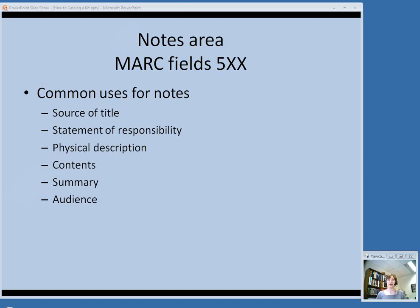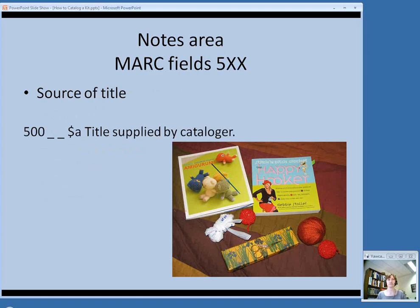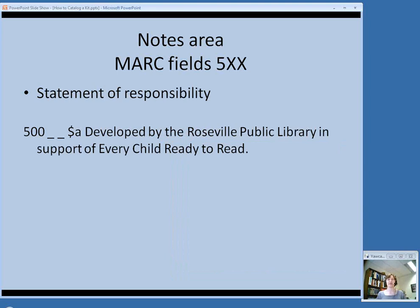The next area is the notes, all going in the 5XX fields. Common notes for kits include source of title, statement of responsibility notes, physical description notes, contents notes, summary notes, and audience notes. For example, if you supplied a title you should add a note saying 'Title supplied by cataloguer.' You can also include notes about other sources of the title in a general 500 note. Here's a statement of responsibility note from a locally produced kit at Roseville Public Library indicating they developed the kit as part of a program called Every Child Ready to Read.